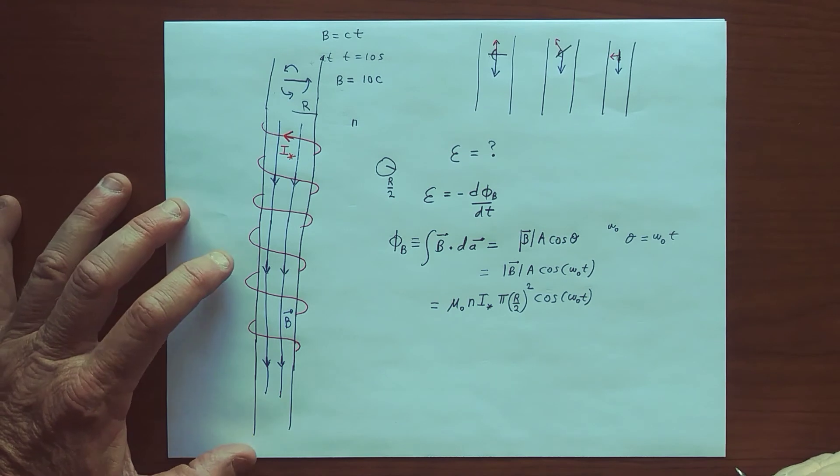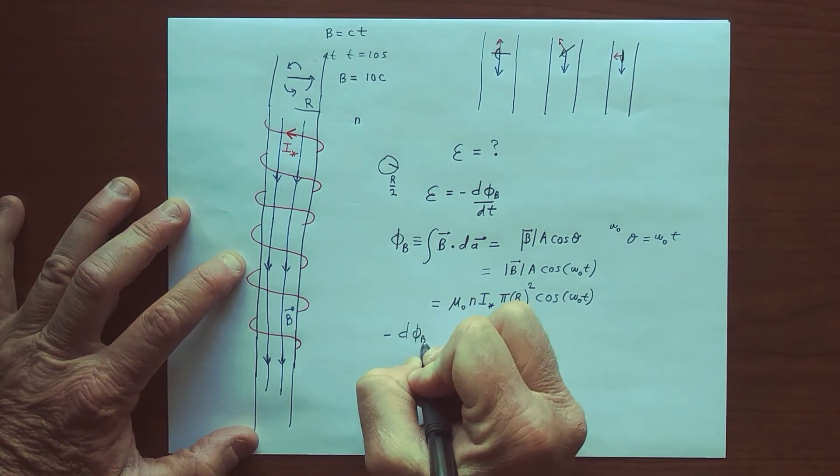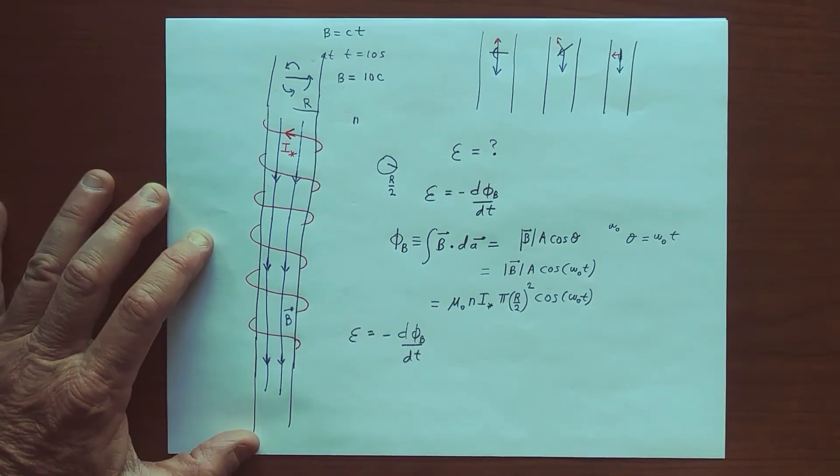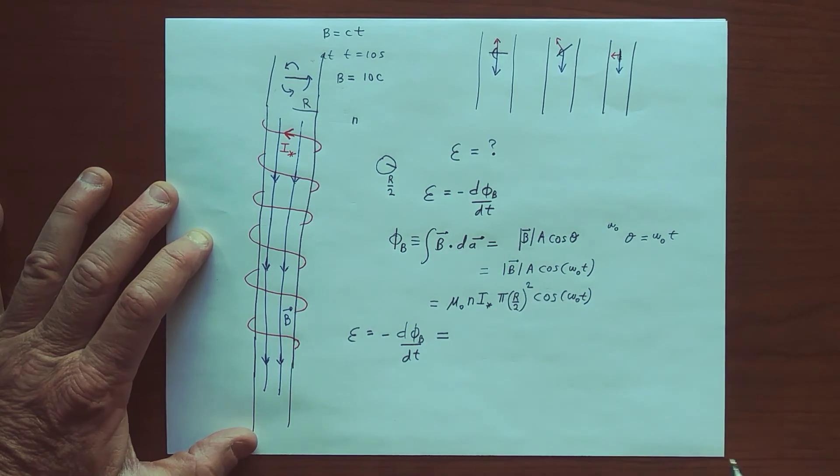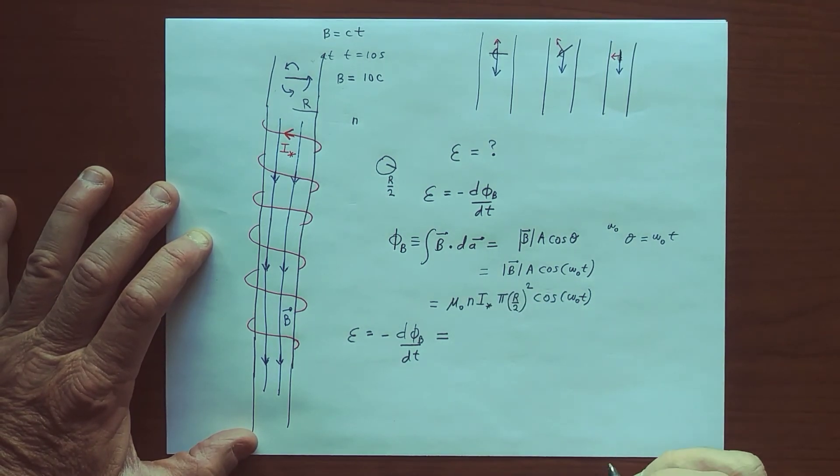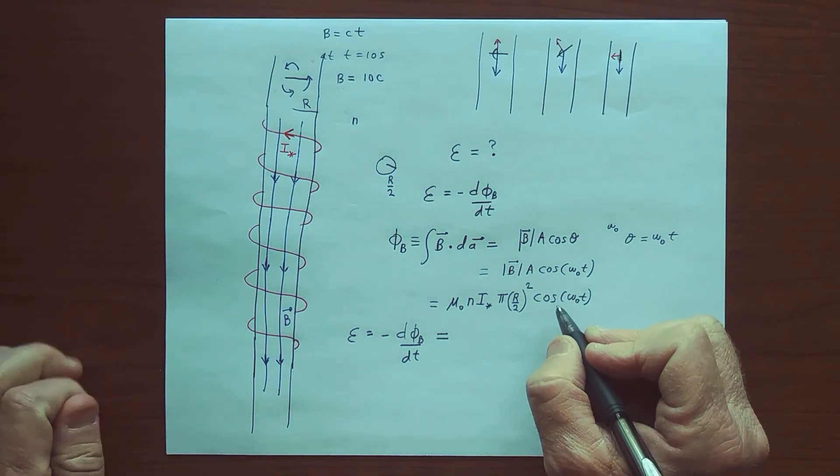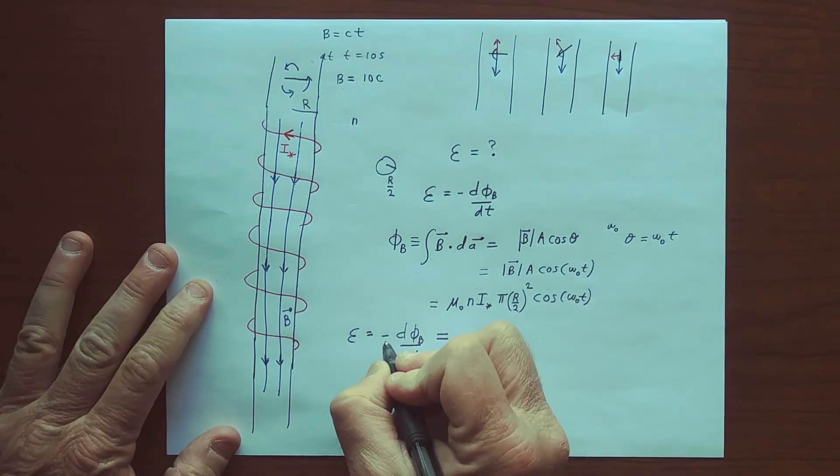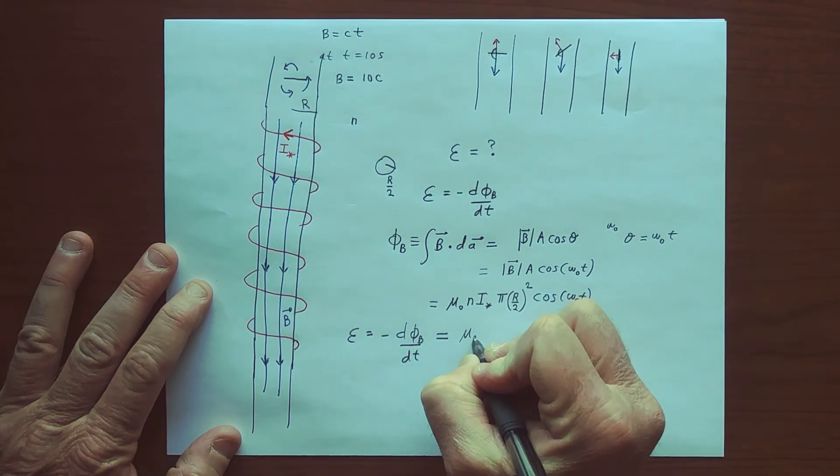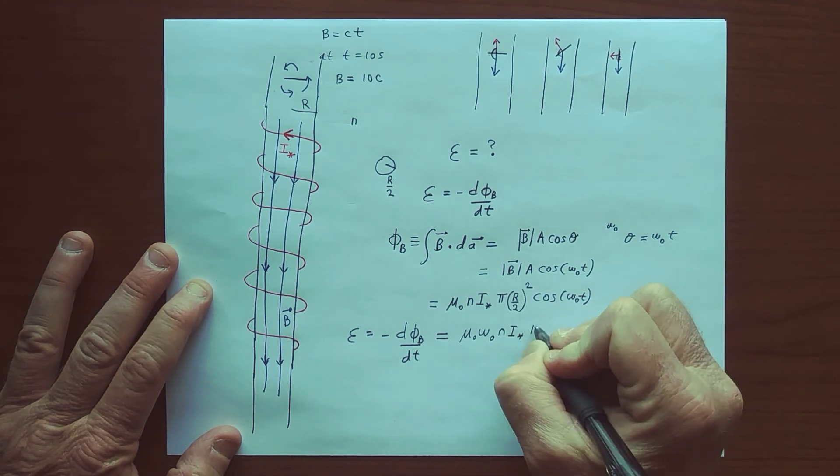And so now we want to take minus the time derivative of this flux. That's the EMF. And so the only thing that's changing with time is the cosine part. So I'm going to pull out an omega, but I'm going to end up with a minus sign, and there's a minus sign here, so I'll get a positive sign.